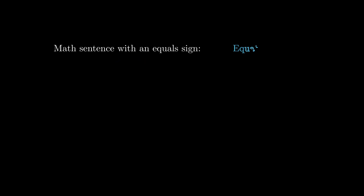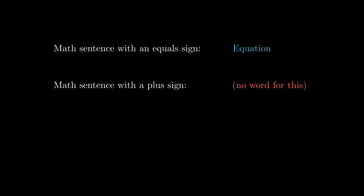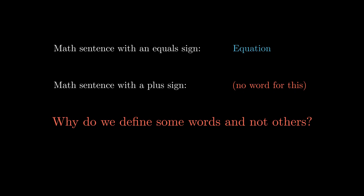So we have a specific word for a bunch of math symbols that specifically contains an equal sign, but not for the ones that specifically contain, say, a plus sign. Have you ever wondered, why is this unique to the equal sign?